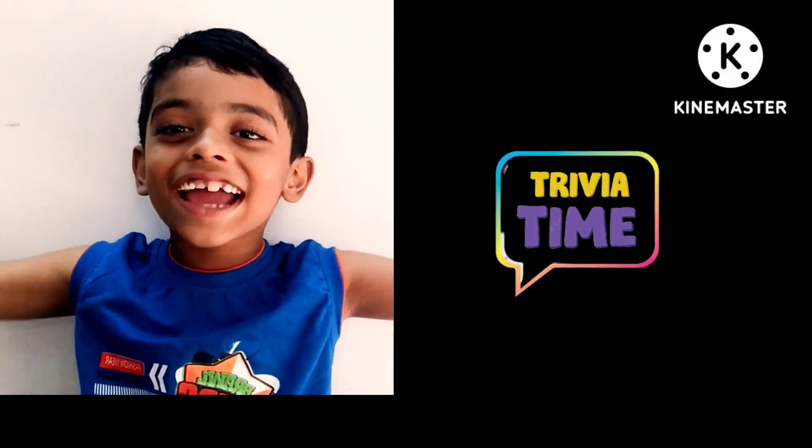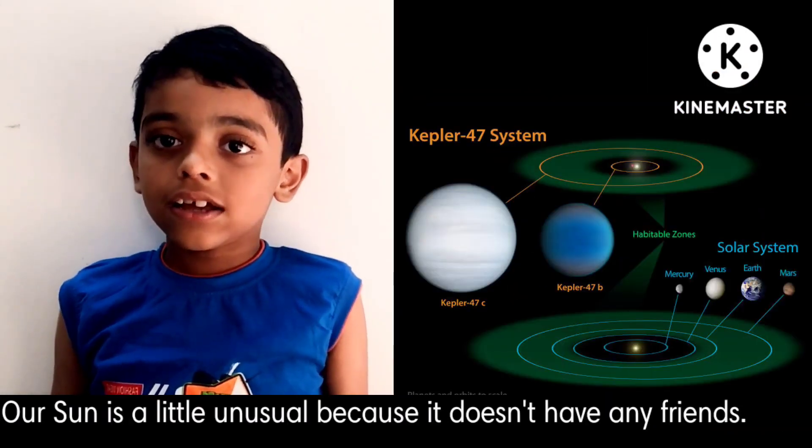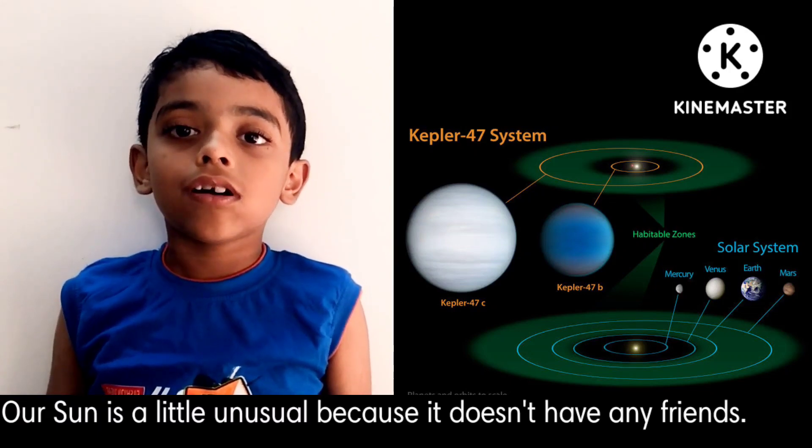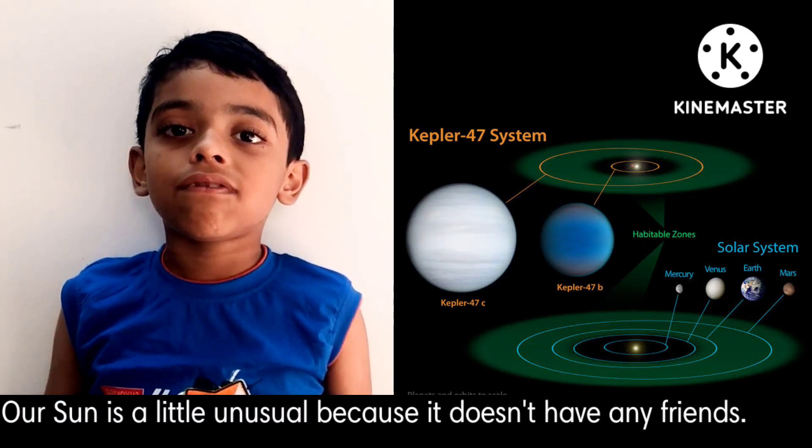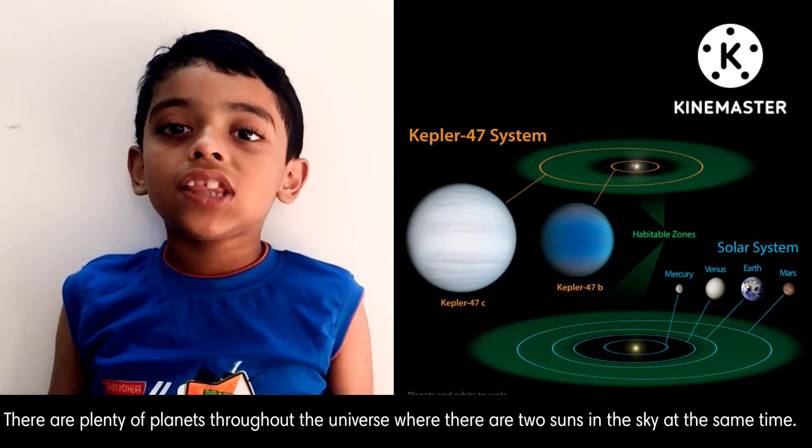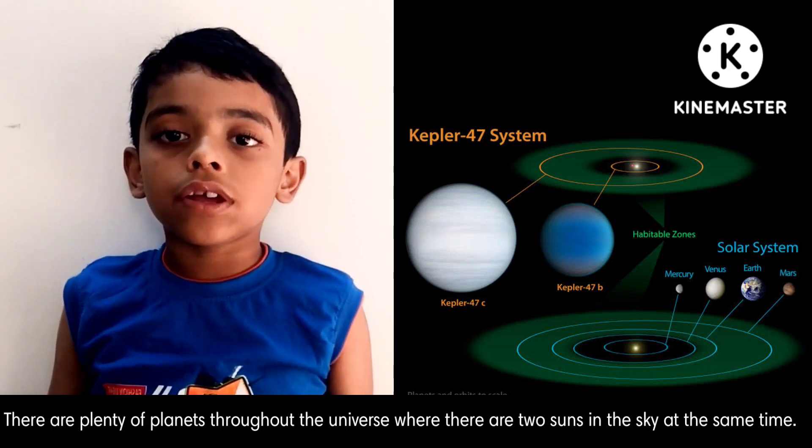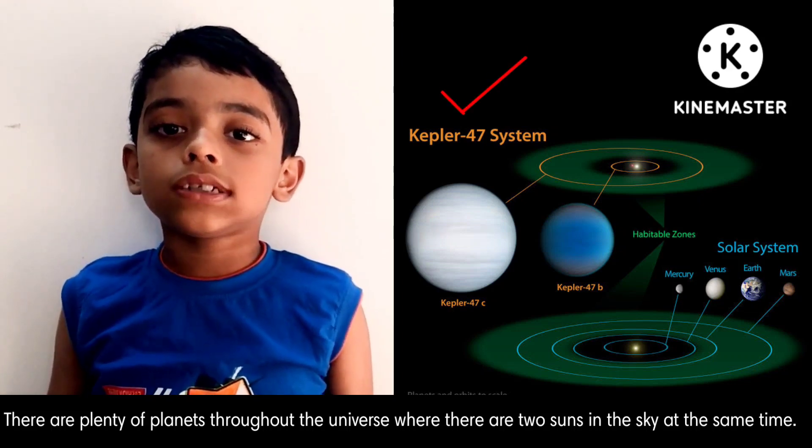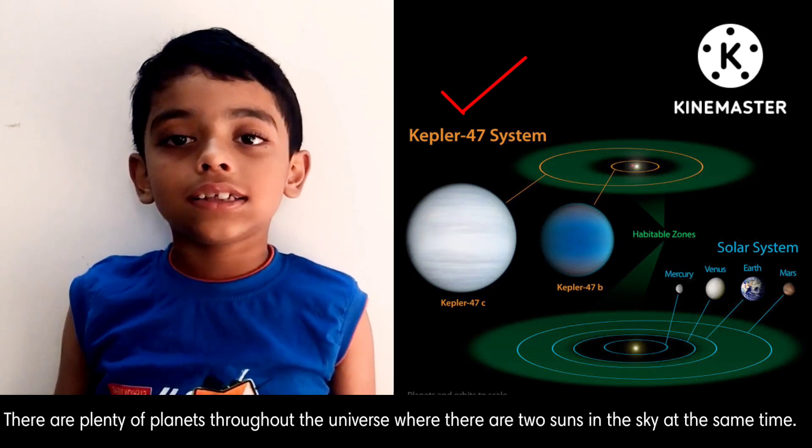Trivia time! Our Sun is a little unusual because it doesn't have any friends. There are plenty of planets throughout the universe where there are two suns in the sky at the same time.